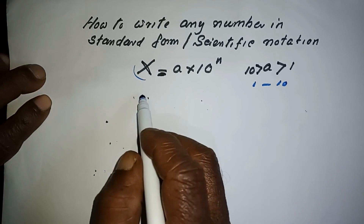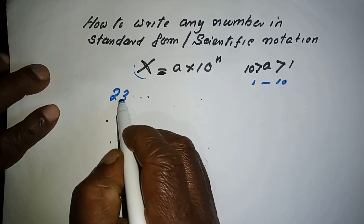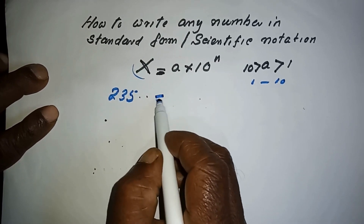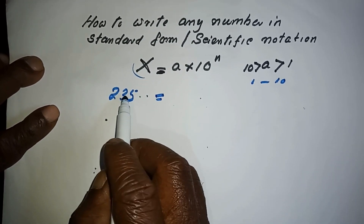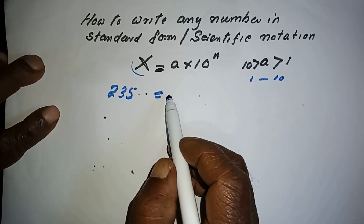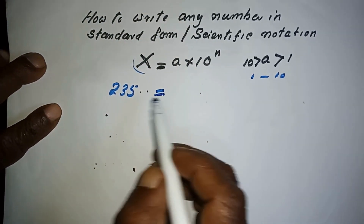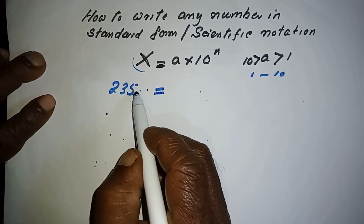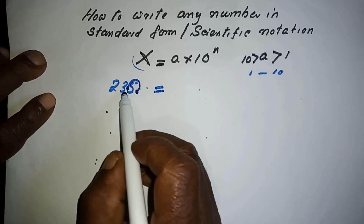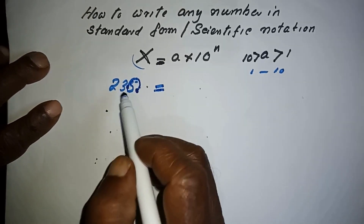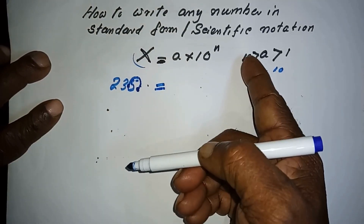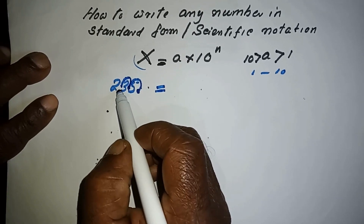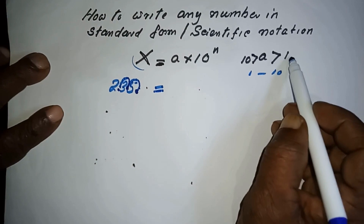The other number should be a power of 10. For example, if we take 235, how to turn this number into scientific notation. First, you have to rewrite it so that it becomes a number between 1 and 10. The decimal point of 235 is at the end. If you shift it one place, you get 23.5, which is greater than 10, so we shift one more place to get 2.35.